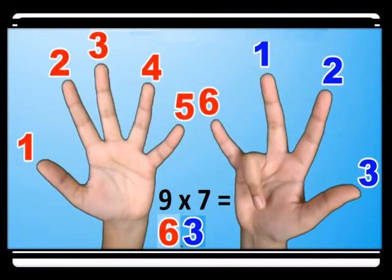For nine times seven, you count the seventh and bend it. Before the bent one you have six fingers, and after you have three fingers — the blue ones. So you have sixty-three. Nine times seven is sixty-three.